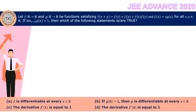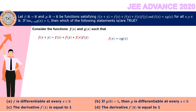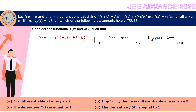Let's consider the given conditions for this problem. The functions f(x) and g(x) are related by three conditions: f(x+y) = f(x)·f(y), f(x) = x·g(x), and the limit as x tends to 0 of g(x) equals 1. We recall these as relations 1, 2, and 3 respectively.